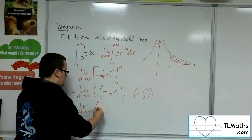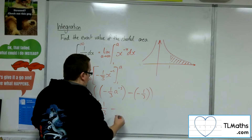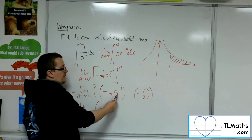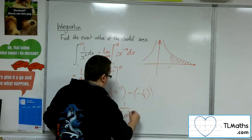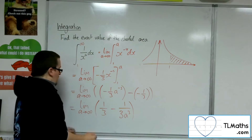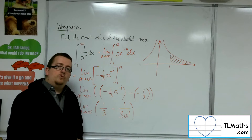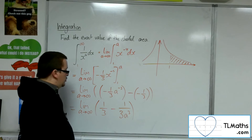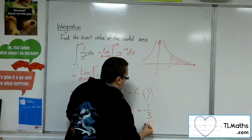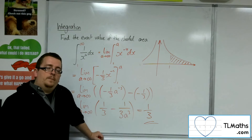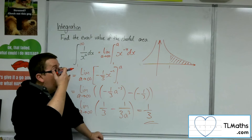Tidying up, we have positive 1 third, take away — and this is the same as minus 1 third times 1 over a cubed — so minus 1 over 3a cubed. As a tends to infinity, this fraction gets smaller and smaller because the denominator is getting ever larger, leaving 1 third take away something very, very small. So, actually, this area is exactly 1 third.